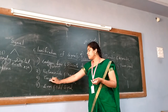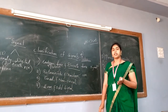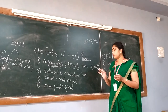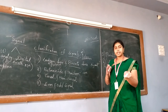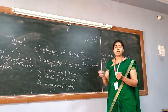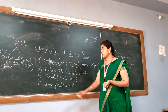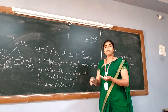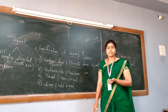Coming to the third one: causal and non-causal. Any signal, if you are able to represent only on the right side — that means when T is greater than 0 — then you can say that signal is causal. If you are not able to represent when T is greater than 0, and only able to represent when T is less than 0, then that is called a non-causal signal.